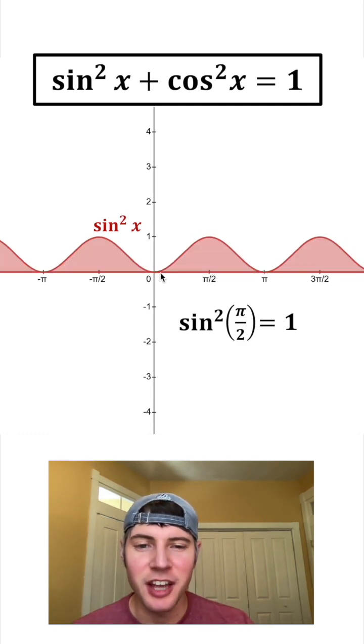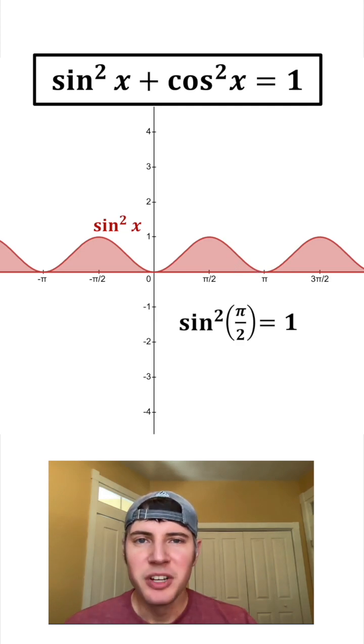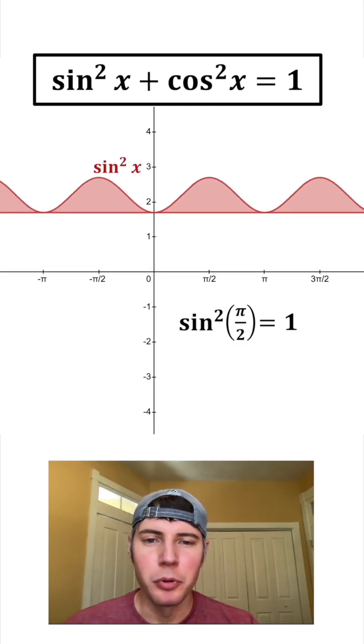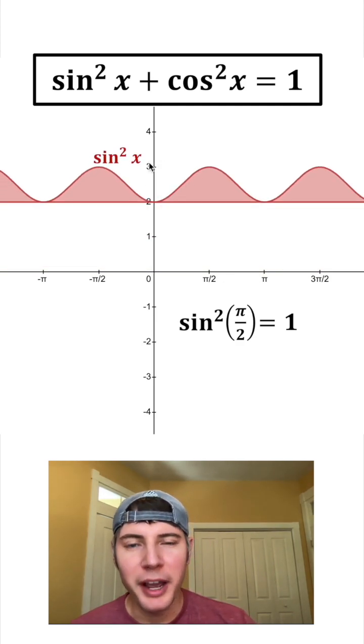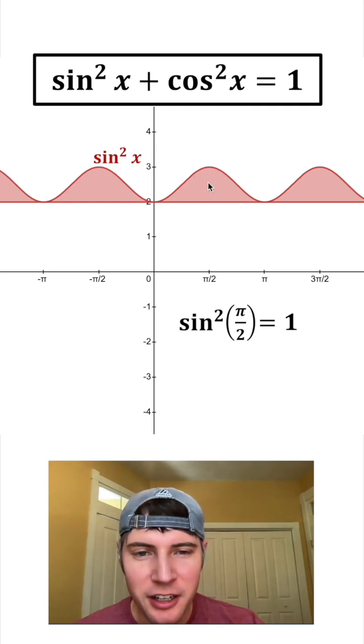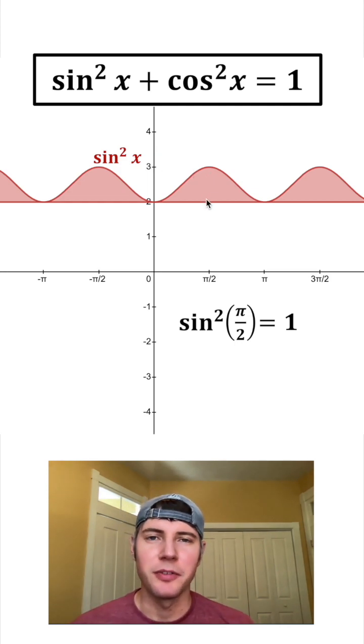We can shade from the x-axis to the height of the sine squared of x graph. The reason that's nice is because if I shift it upwards, it's no longer the height on the y-axis that tells me the function value, it's the height of the shading at each point that tells me the function value.